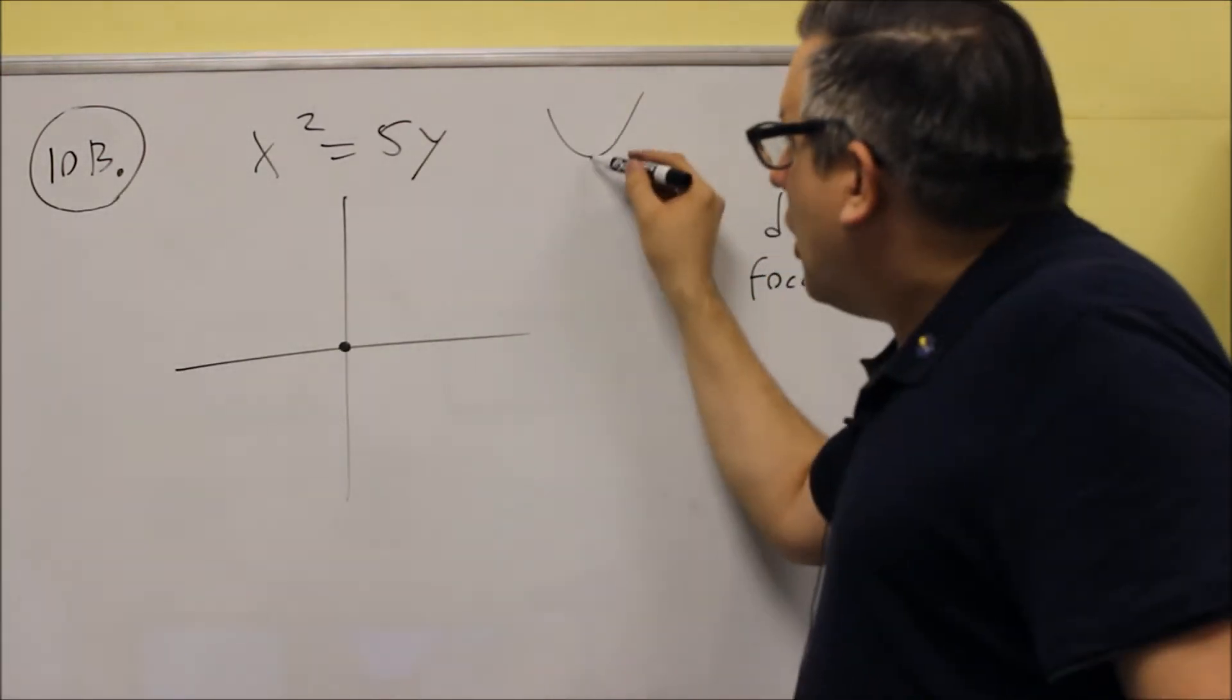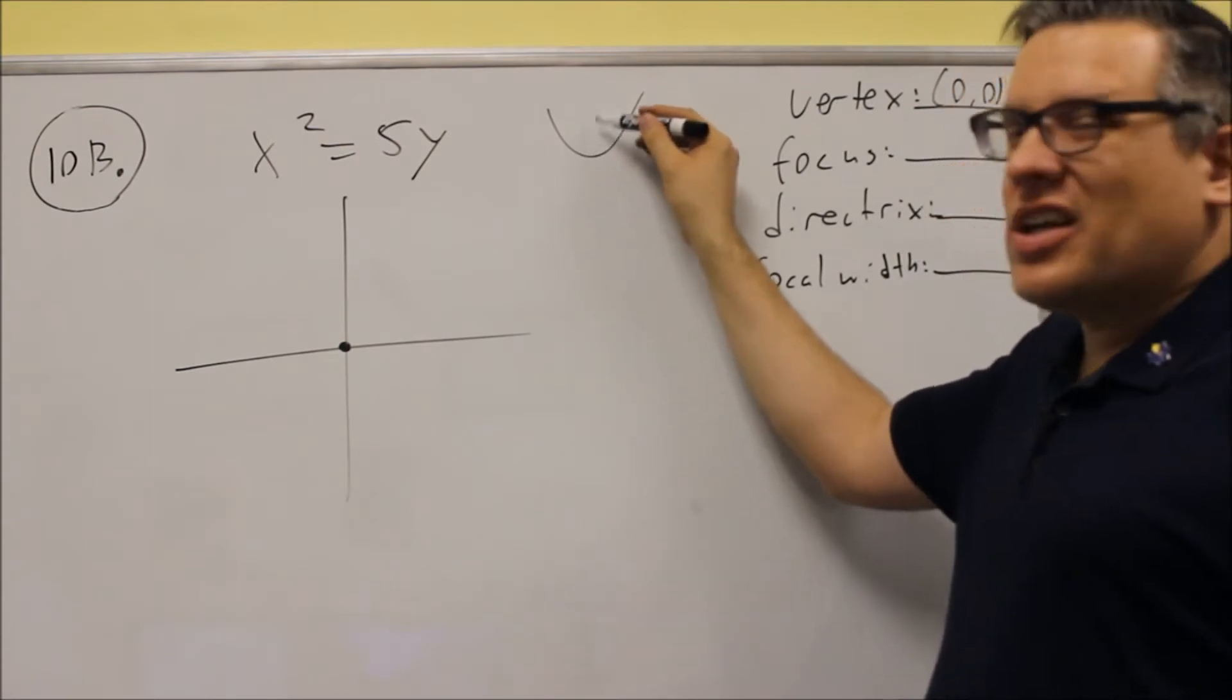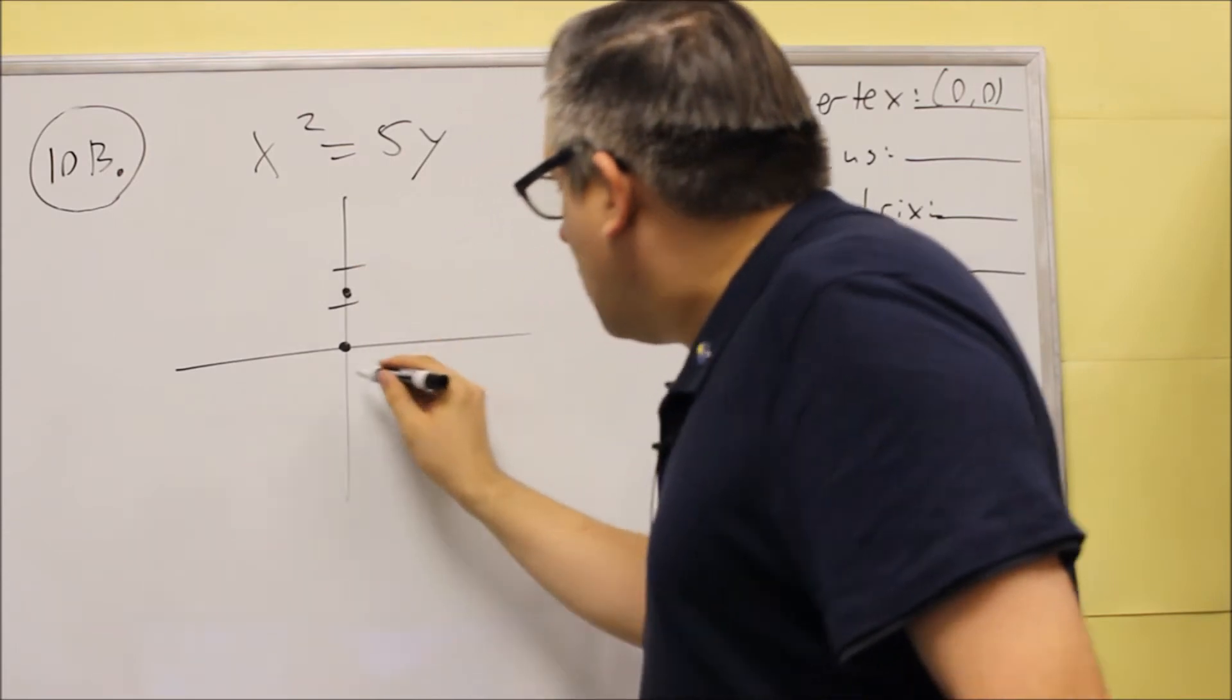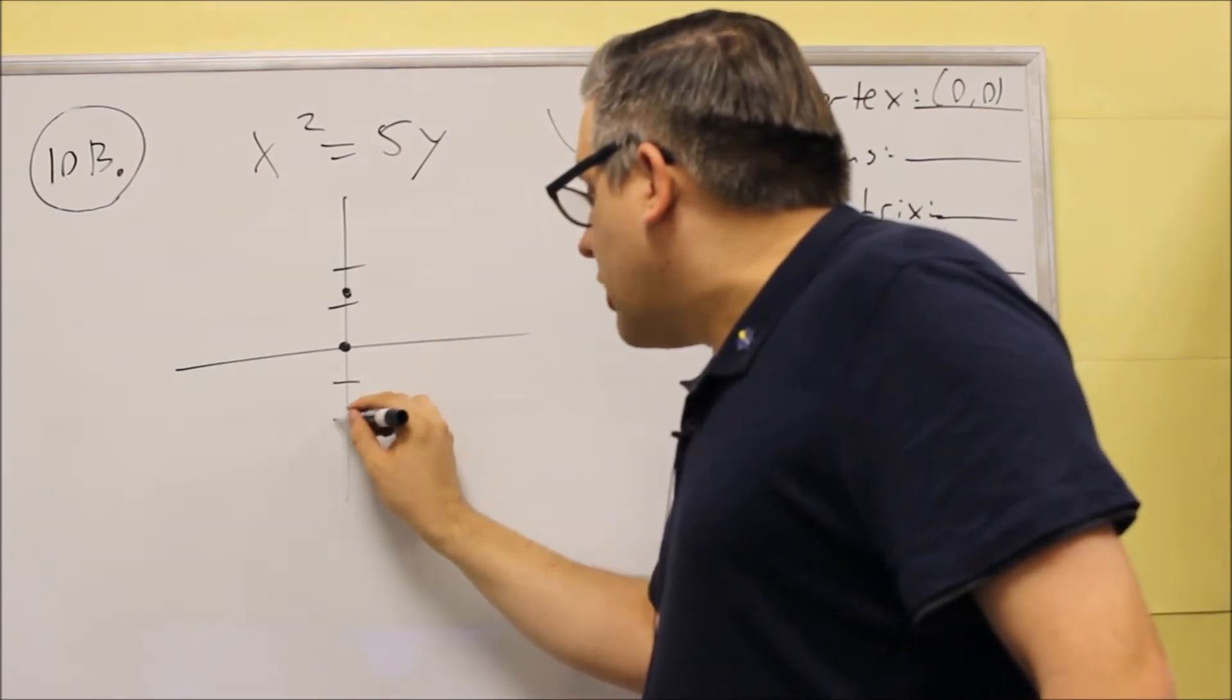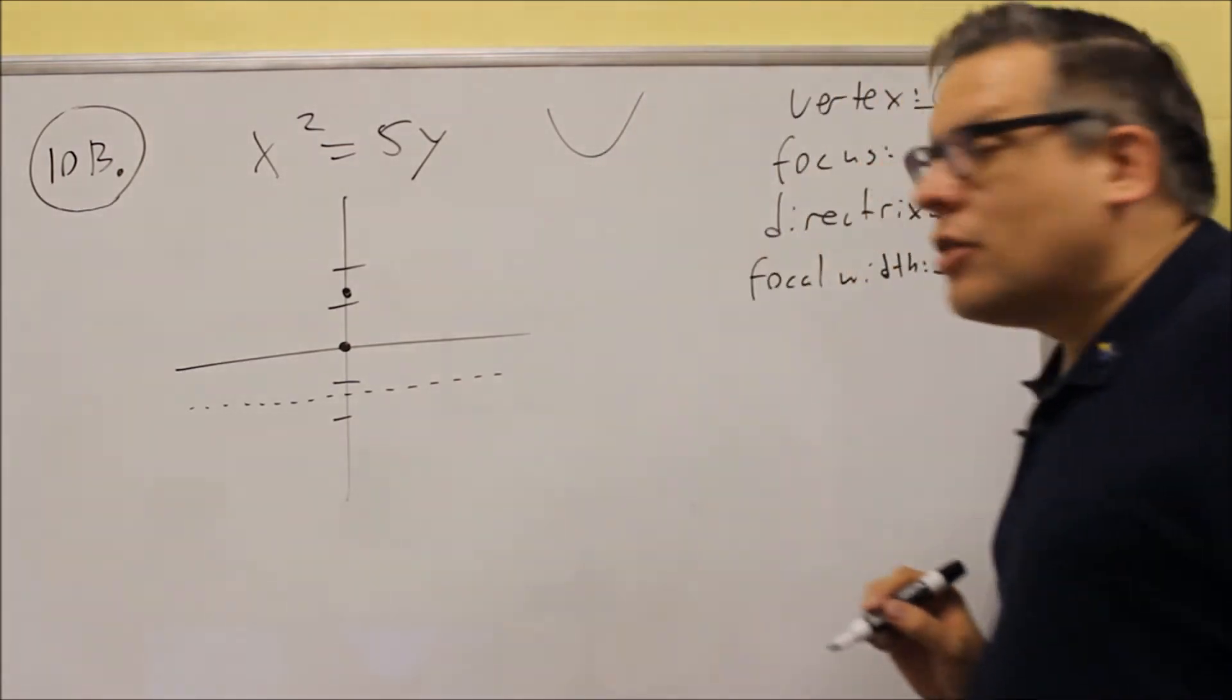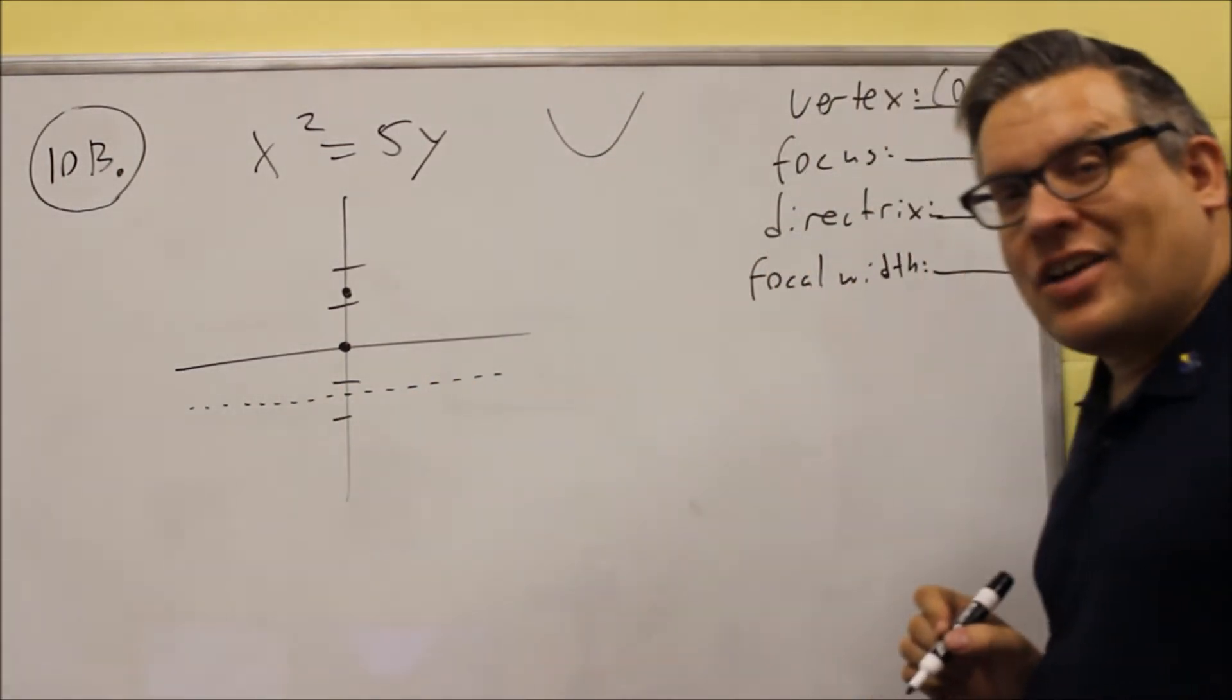We're going to go up, because the vertex has to be inside the curve, so if we go up, 1.25 will be right here, and we're going to go down 1.25, and that's going to be the directrix that runs behind the parabola. We know it opens up, so the directrix has to run behind it.